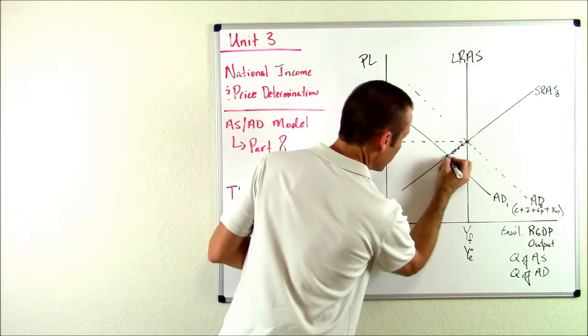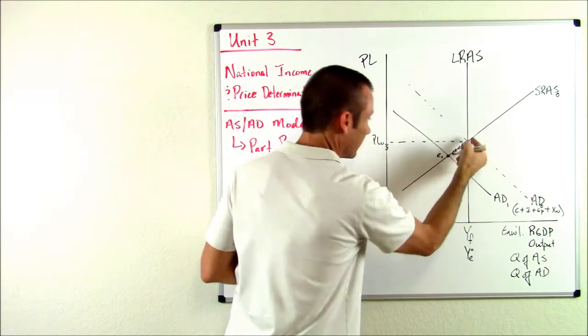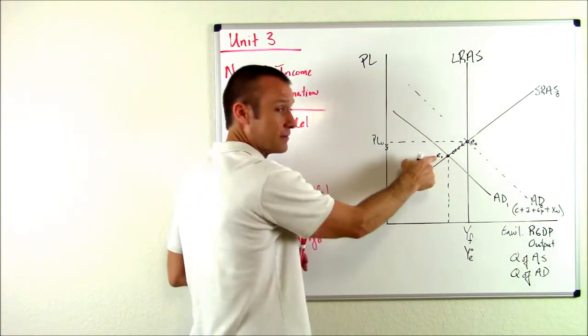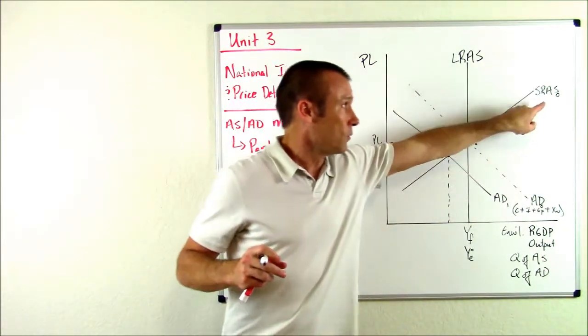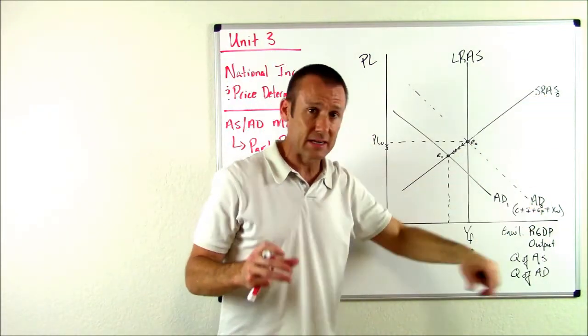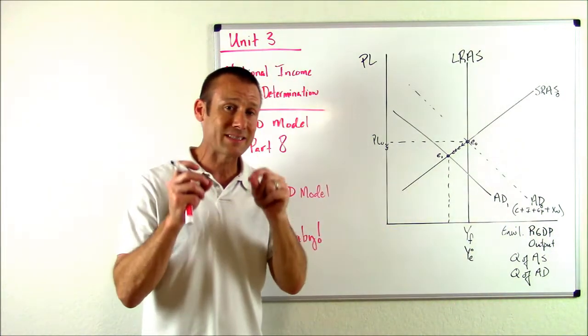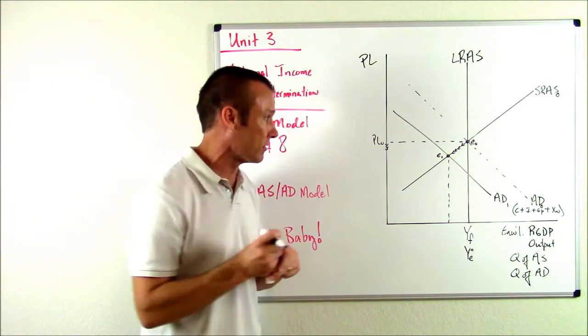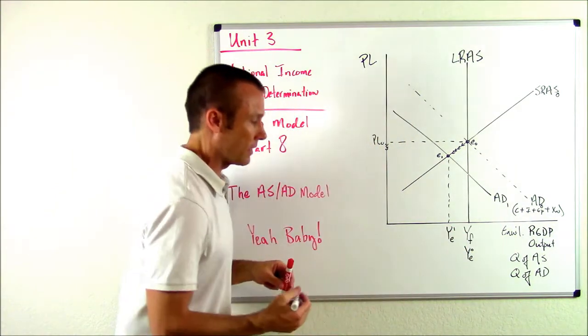When businesses start to lower prices, production will begin to fall off. And when production begins to fall off, we will move to this point right here, E sub one. So E sub zero to E sub one, I'm going to draw that down. Take note, that is an equilibrium. The economy is always in equilibrium when it comes to the SRAS and AD curves. So when we talk about the equilibrium real GDP, that is once again determined by the intersection of the SRAS and AD curve.